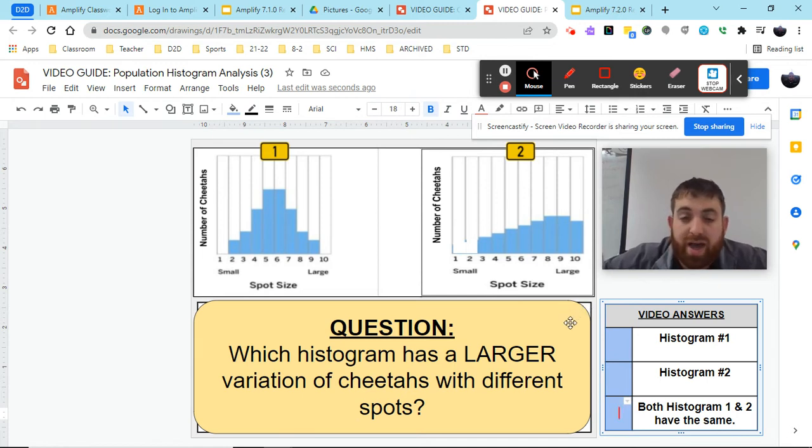All right, do you think you got it? Let's go ahead and take a look. Which histogram has a larger variation of cheetahs? Whenever we think variation, we have to think the number of traits. And we know that each histogram shows up to 10 different variations of spot sizes,